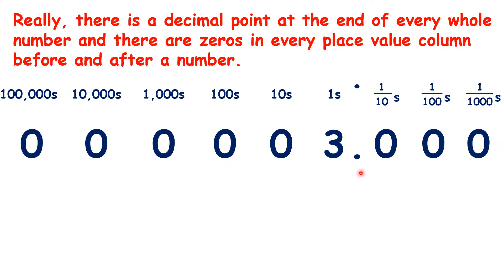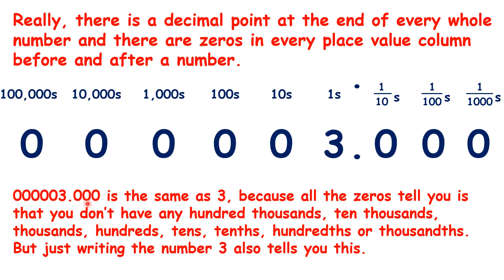So 000003.000 is the same as 3, because all the zeros tell you is that you don't have any hundred thousands, ten thousands, thousands, hundreds, tens, tenths, hundredths, or thousandths. But just writing the number 3 also tells you this.